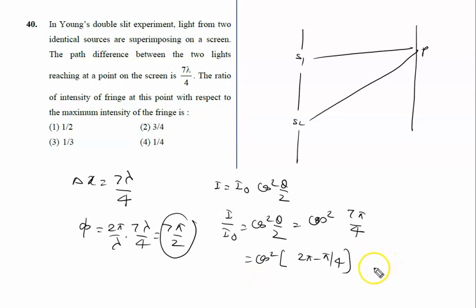And we know very well cos 2 pi minus theta is cos theta, so it is cos squared pi by 4. Cos pi by 4 is 1 by root 2, so square of 1 by root 2 is 1 by 2. The right answer of this problem is option 1, that is 1 by 2.